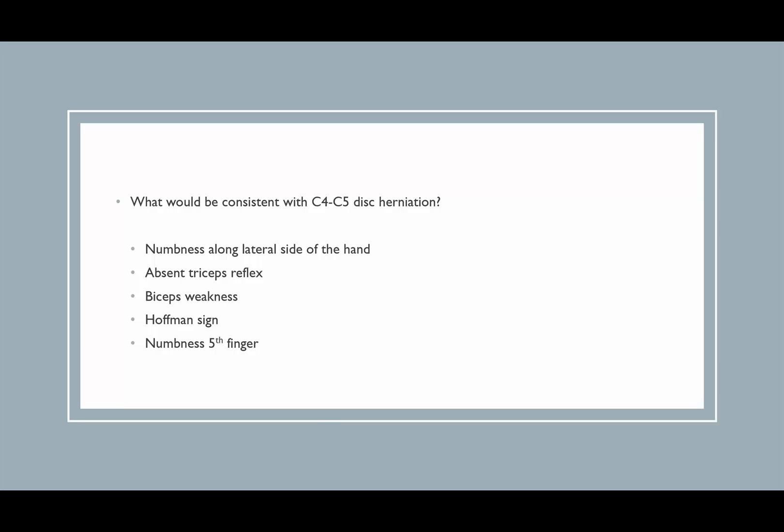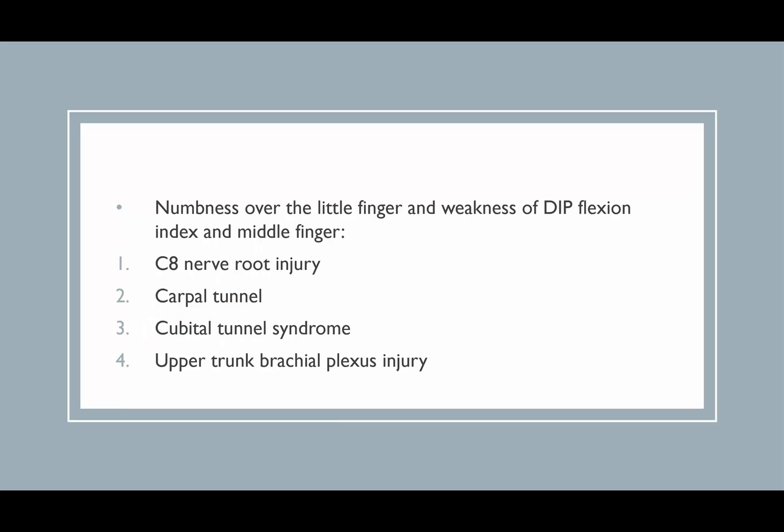Next question: what would be consistent with a C4-C5 disc herniation? Thinking about the exiting nerve root for a far lateral disc herniation at that level, you're affecting the C5 nerve root. The myotome for C5 is the biceps, so you would expect biceps weakness.